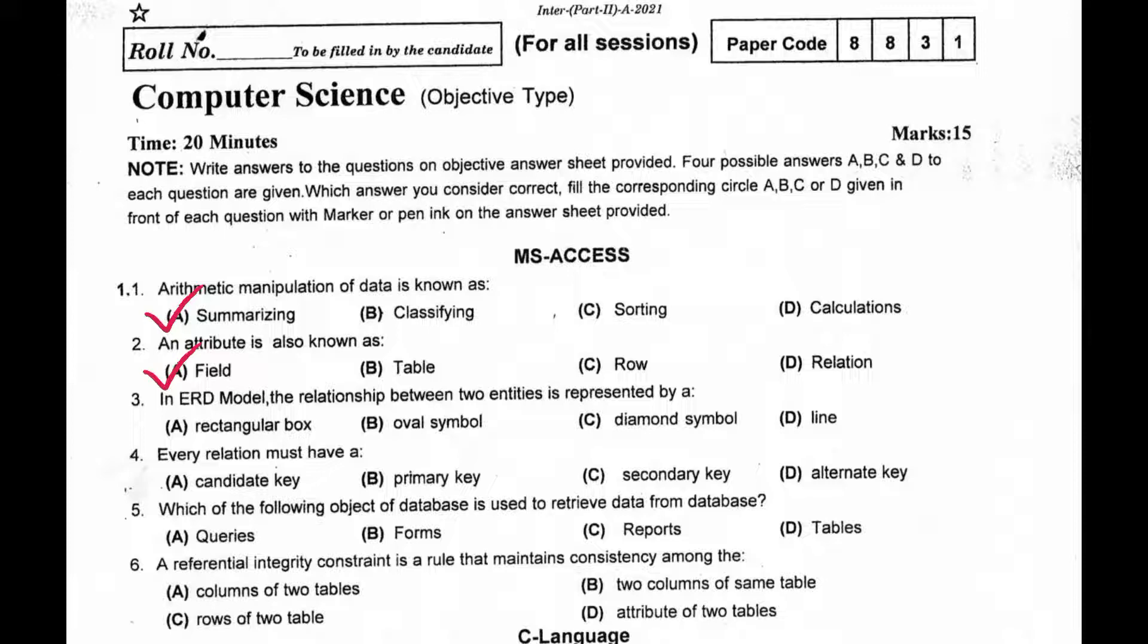In ER model, the relationship between two entities is represented by a diamond symbol. Every relation must have a primary key. Which of the following object of database is used to derive data from database? Referential integrity constraint is a rule that maintains consistency among the rows of two tables.